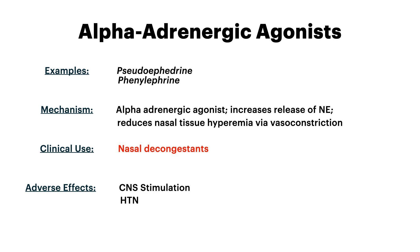Alpha-adrenergic agonists are our next category. The examples here include pseudoephedrine and phenylephrine. The mechanism, as the name implies, is that these are alpha-adrenergic agonists — they cause the release or availability of norepinephrine, which reduces the hyperemia in the nasal tissues by vasoconstriction. So these are used as nasal decongestants. Adverse effects are what you'd expect: because this is an alpha-adrenergic agonist, we can see high blood pressure and other stimulatory central effects.